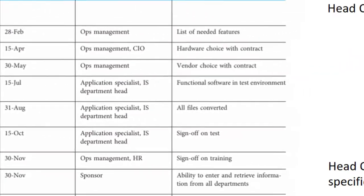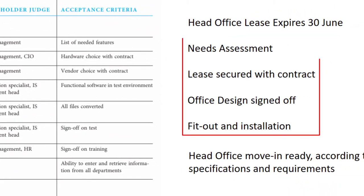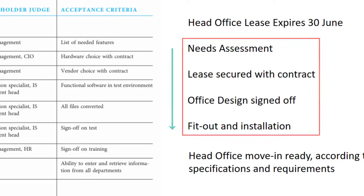In our head office example, milestones may include: a needs assessment, getting the office lease secured, office design, fit-out and installation, and completion of the office fit-out. These milestones could vary depending on the scope of the project.